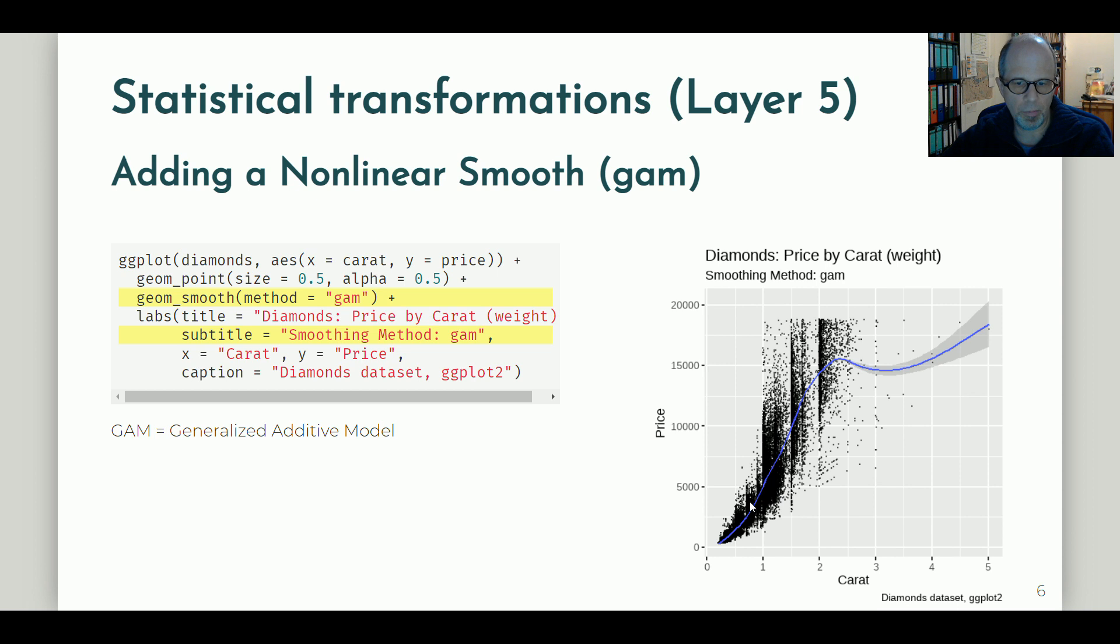Here you see that our smoothing line now does not extend beyond the range of valid data points. We see that for the lower levels of carats we have an almost linear trend but then it levels off, and we get wide confidence intervals for the higher ranges of carats because there are very few data points. You can suppress this gray shaded area for the confidence intervals if you like using the SE parameter. But I think here we have already made an improvement.